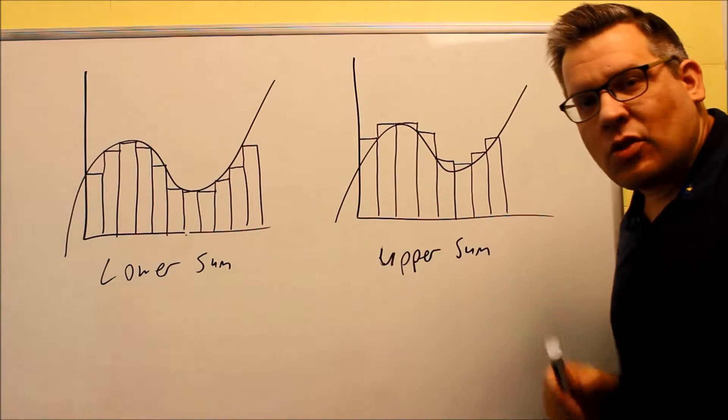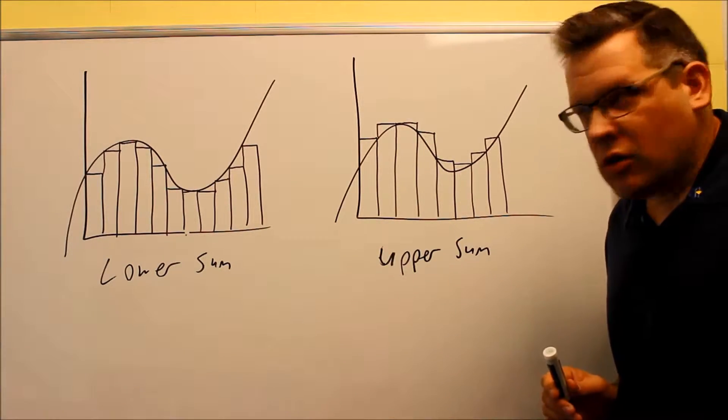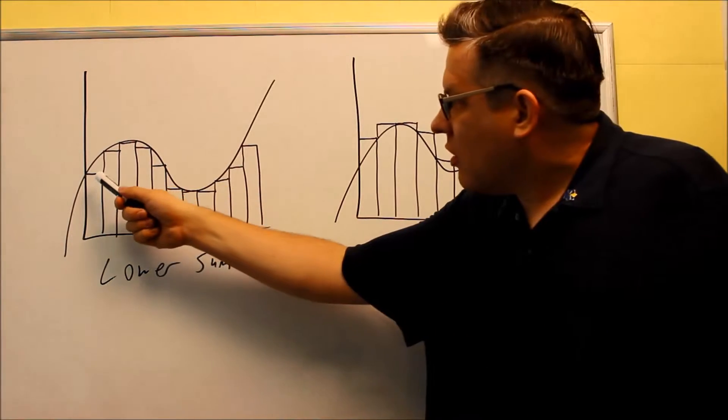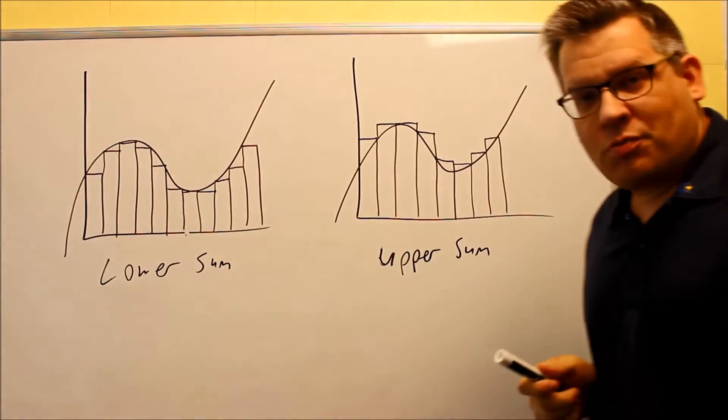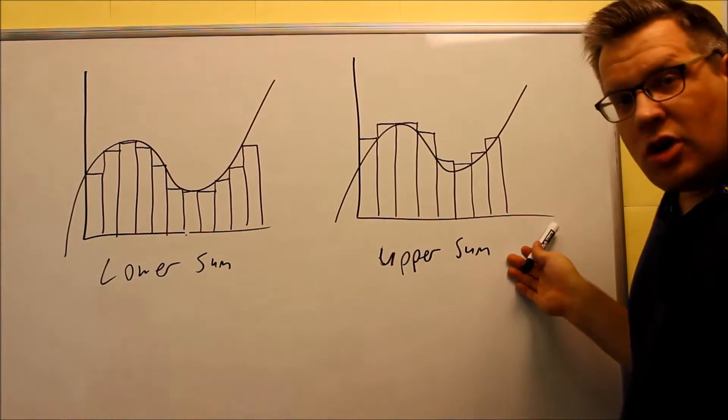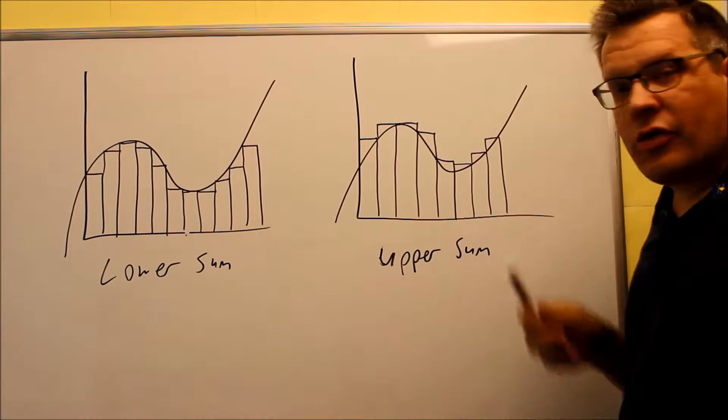So we have two different ways that we can estimate this. We have what's referred to as a lower sum. Now a lower sum, what that means is that all the rectangles stay below our actual function. And then for upper sums, we have all the rectangles appear above the function.